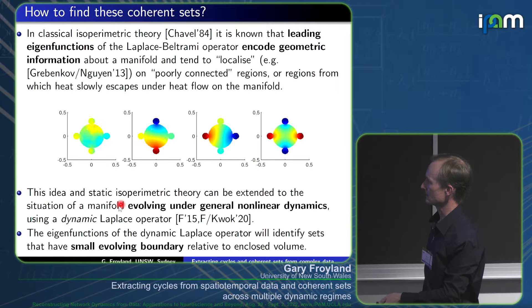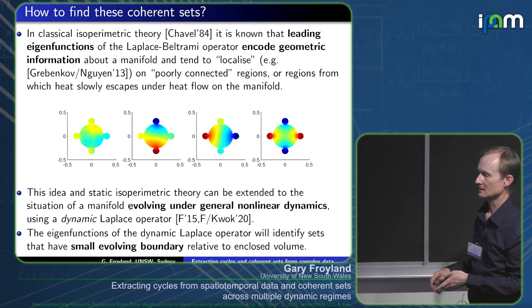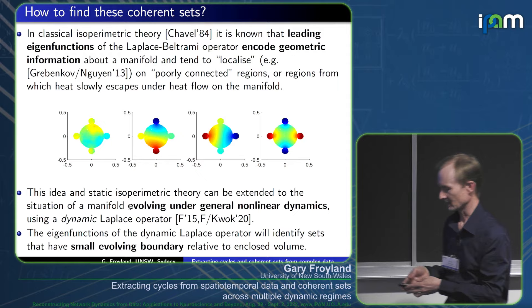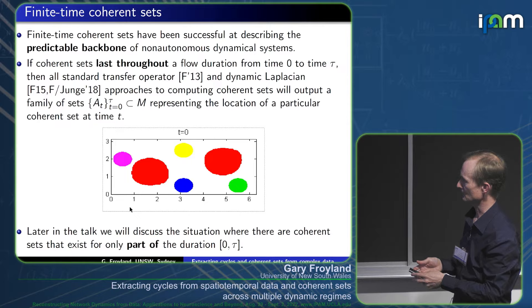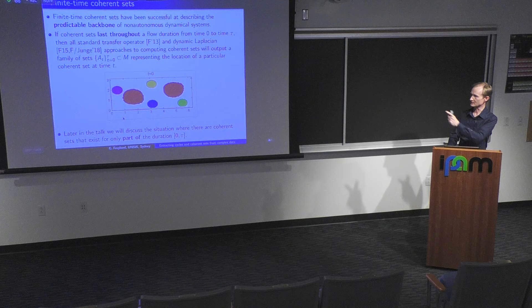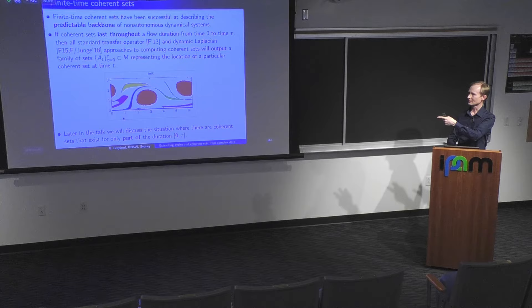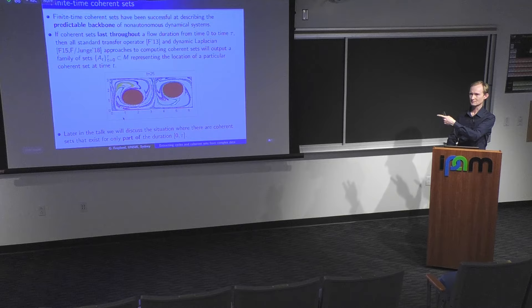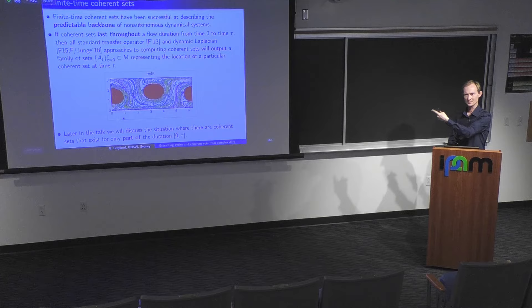In the dynamic case, the sets you're looking for don't just have small boundary-to-volume ratio, but a small evolving boundary-to-volume ratio. Looking at the movie: initially all sets are like disks, but as you run the dynamics, the ones that aren't coherent (not red) get a very long boundary very quickly, while the red ones maintain a small boundary. This is the dynamic version of the static isoparametric property.